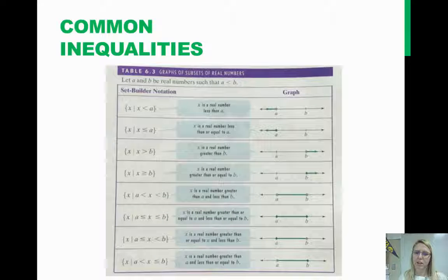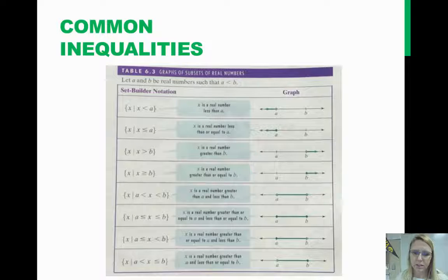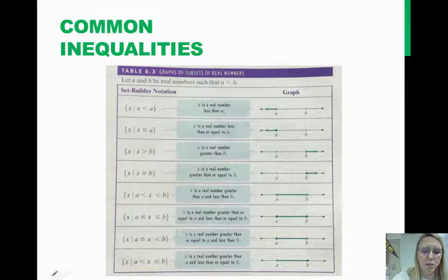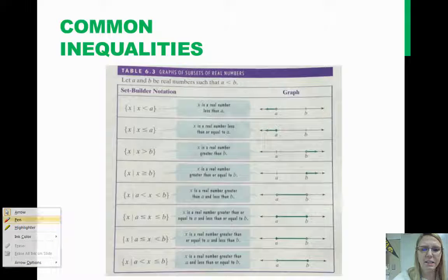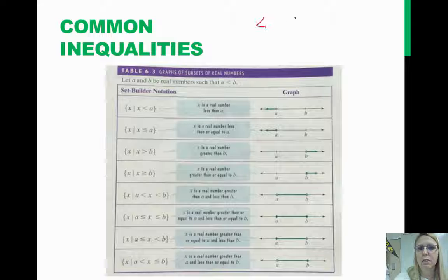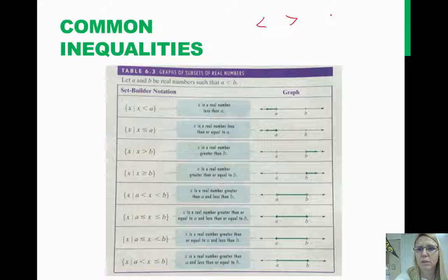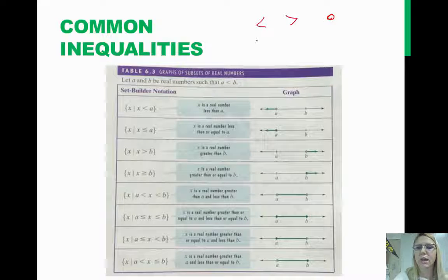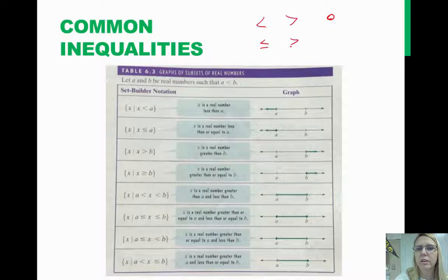So the first thing I want you to look at is this chart. This is a good overview of all the different inequalities you may be dealing with. One of the things I wanted to point out is that when you have a less than sign or a greater than sign, you're going to have an open circle on your number line. And if you have a less than or equal to or greater than or equal to, you're going to have a closed circle.